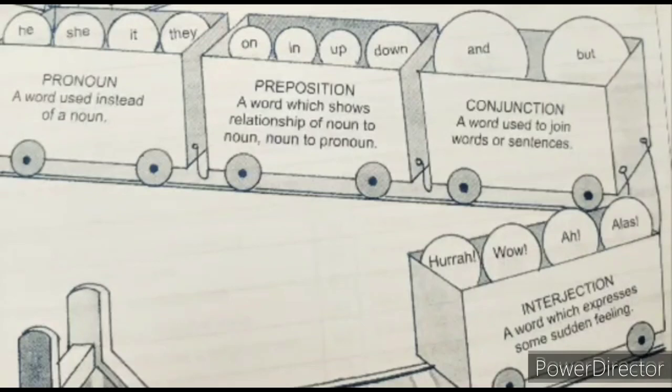Now, jump to our next bogey. That is conjunction. Conjunction equals to joining words. How? Let's see. A word used to join words or sentences. So what is conjunction? Conjunctions are the words which are used to join two words or two sentences. Some examples: and, but, because and so on.